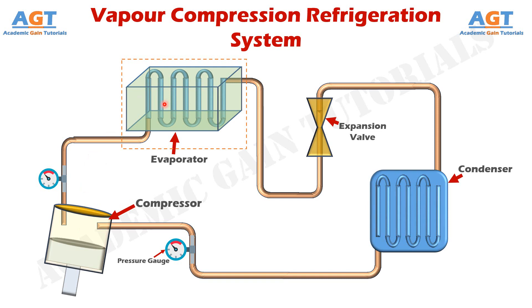Throughout the whole process, our main purpose is to ensure that a continuous cooling effect or refrigeration effect is obtained in the evaporator. The evaporator is the component where the refrigeration or cooling actually takes place. It is placed in the region where we need cooling, and it absorbs all the heat of that region, passing that heat to the cold refrigerant passing through the evaporator coils, thus cooling down the surrounding environment.